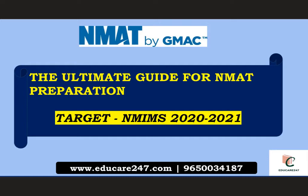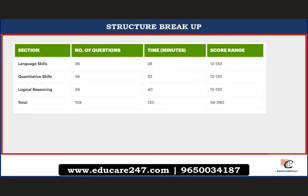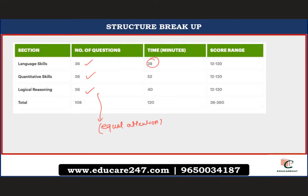First and foremost, let me emphasize the changes that have happened in NMAT. Language Skills, Quantitative Skills, and Logical Reasoning are now at par in terms of number of questions — 36 each. The minutes allotted individually for each section are quite appropriate and justifiable.